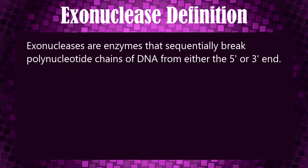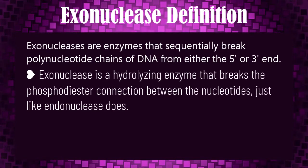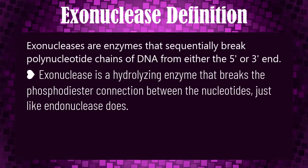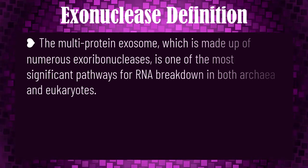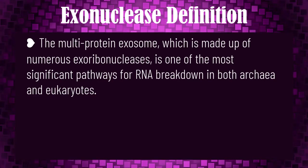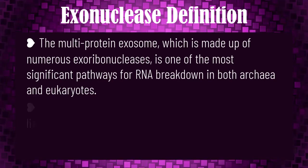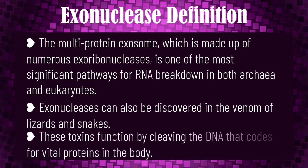Exonucleases are enzymes that frequently break polynucleotide chains of DNA from either the 5-prime or 3-prime end. A few points about exonucleases that differentiate them from endonucleases: exonuclease is a hydrolyzing enzyme that breaks the phosphodiester connection between the nucleotides, just like endonuclease does. The multi-protein exosome, which is made up of numerous exoribonucleases, is one of the most significant pathways for RNA breakdown in both archaea and eukaryotes. Exonucleases can also be discovered in the venom of lizards and snakes; these toxins function by cleaving the DNA that codes for vital proteins in the body.